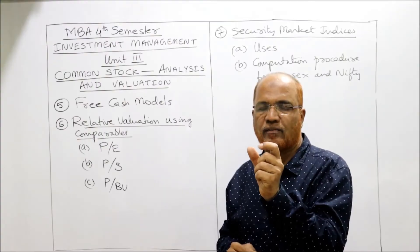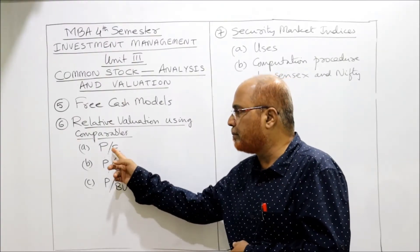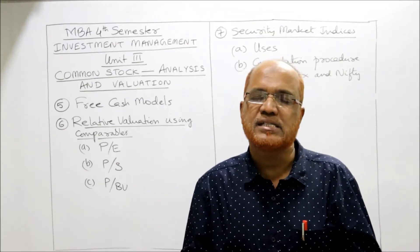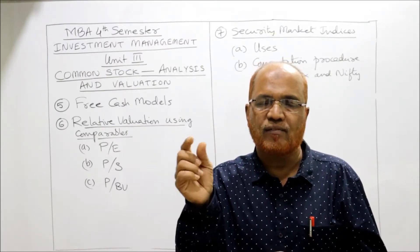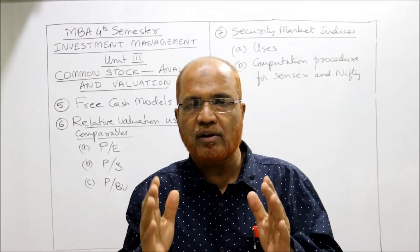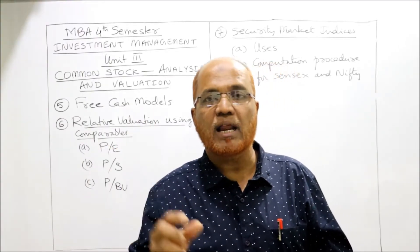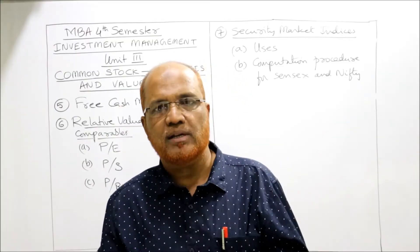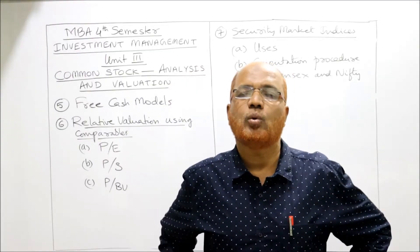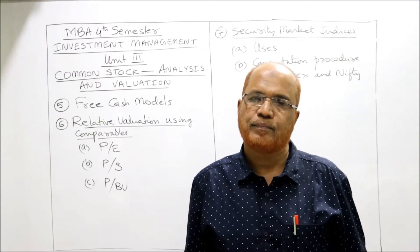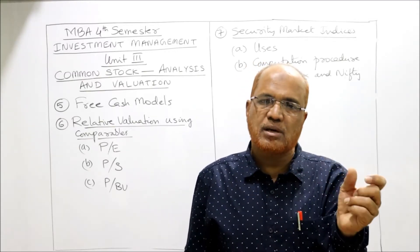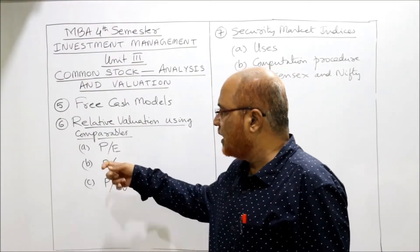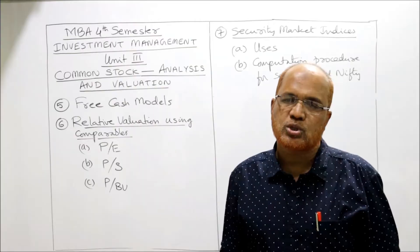In relative valuation using comparables, we calculate value using one or more comparables. The first comparable is the Price-Earnings (PE) ratio. The formula for PE ratio is current market price per share divided by earnings per share. We calculate the average PE ratio of the enterprise for the past few years, estimate the current year earnings, and then using this PE ratio multiplied by current earnings, we find the intrinsic value. This is called the PE approach.